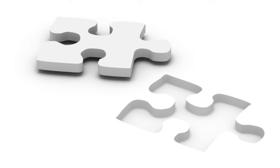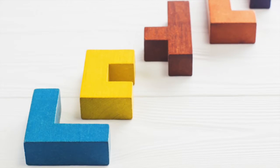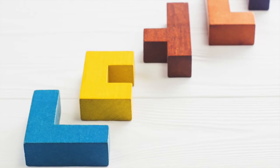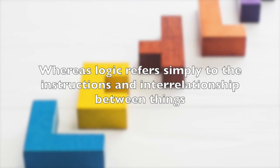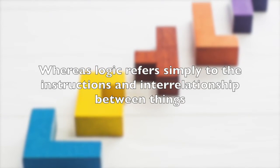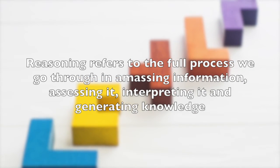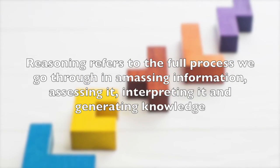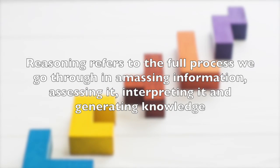In the previous section we talked about logic as a set of well-defined rules at the heart of critical thinking. In this section we will expand upon this to talk about the full process of reasoning. Whereas logic refers simply to the instructions and interrelationship between things, reasoning refers to the full process we go through in amassing information, assessing it, interpreting it, and generating knowledge.